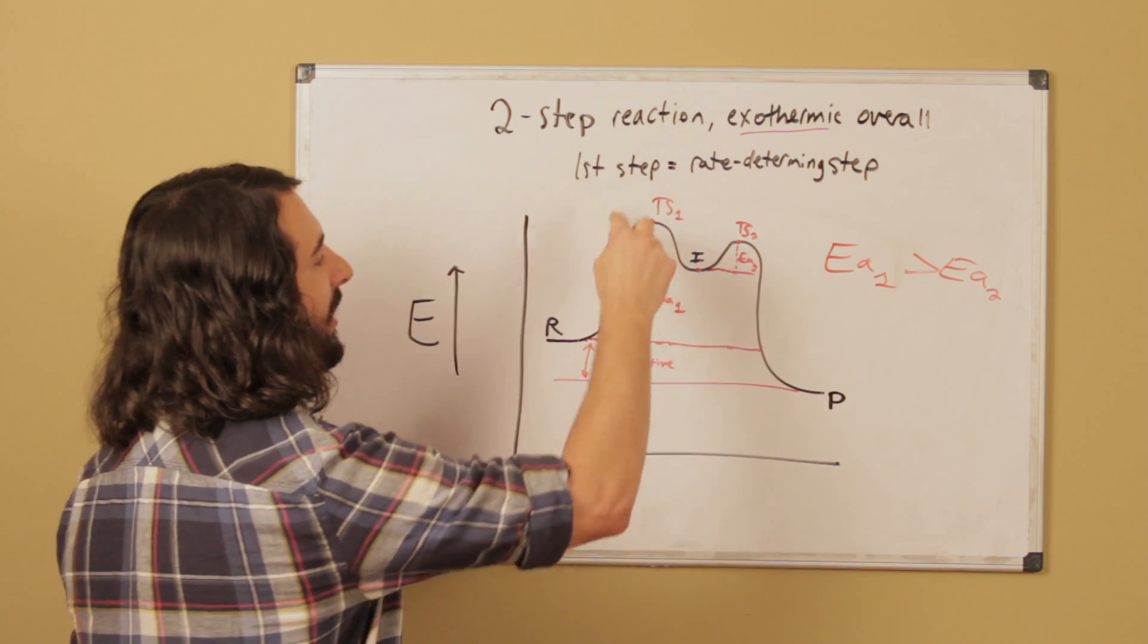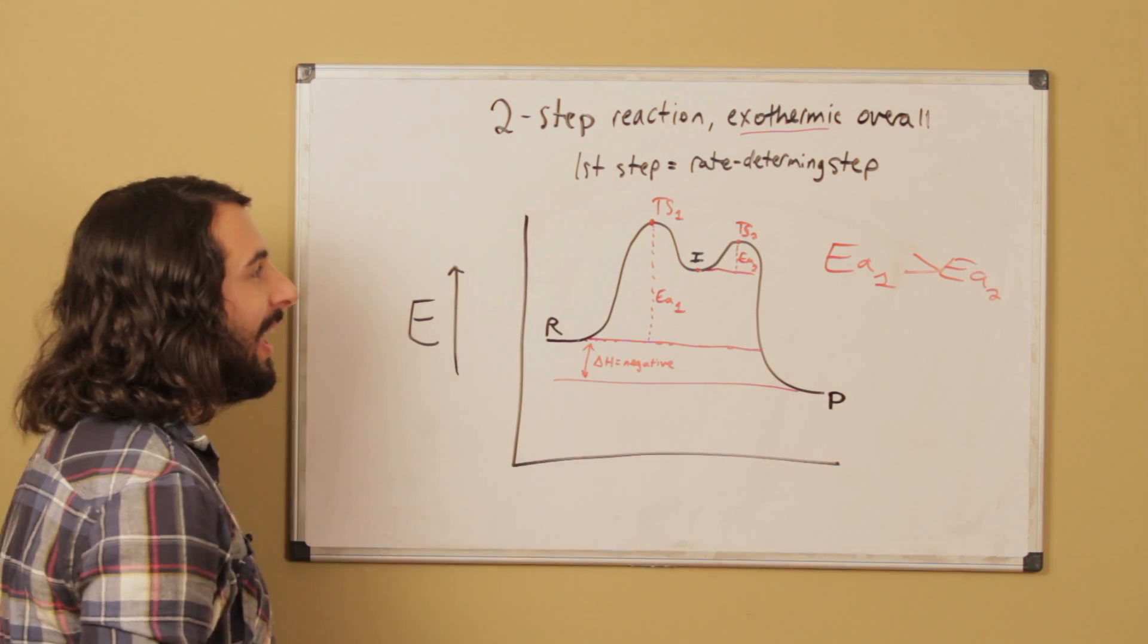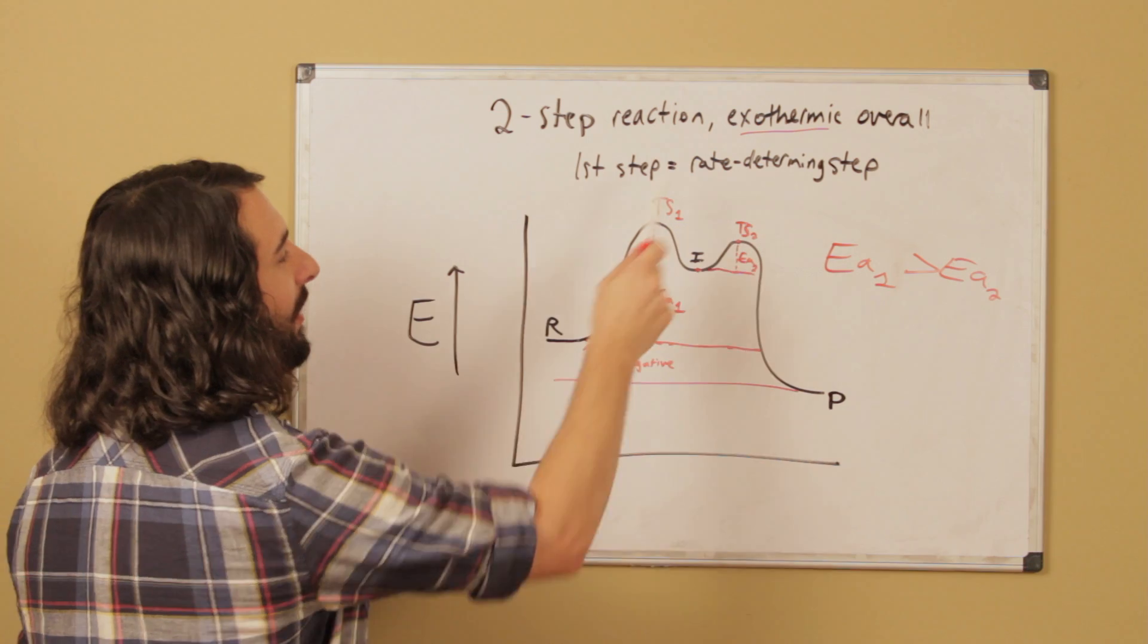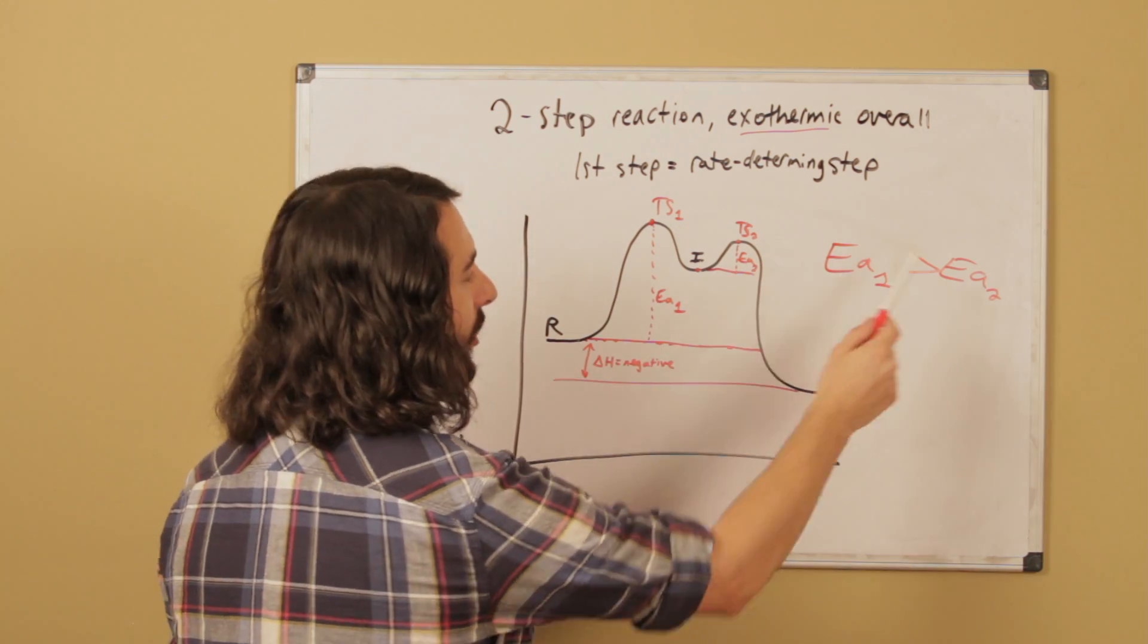Two-step reaction means we need two humps like that. Exothermic means the products must sit lower than the reactants, and the first step being the rate-determining step means that EA1 must be greater than EA2.